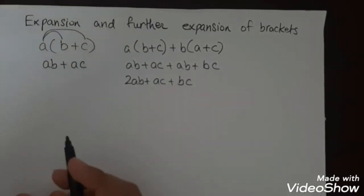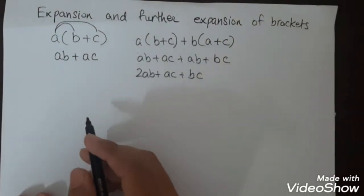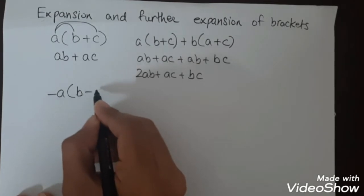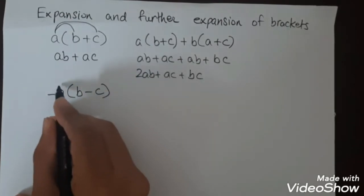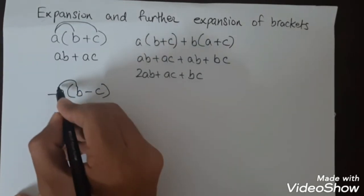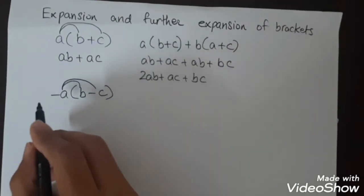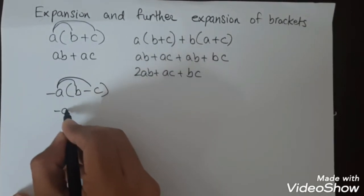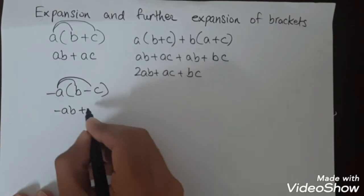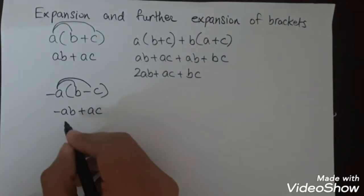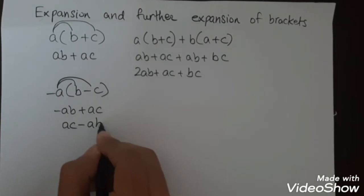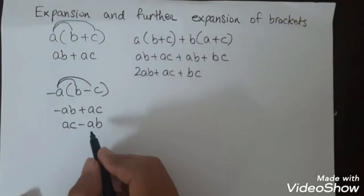In further expansion, this works with negative numbers. For example, we have -a(b-c). So -a multiplied by b and -a multiplied by -c. This will be -ab and plus ac. We will write this the other way around like ac minus ab.